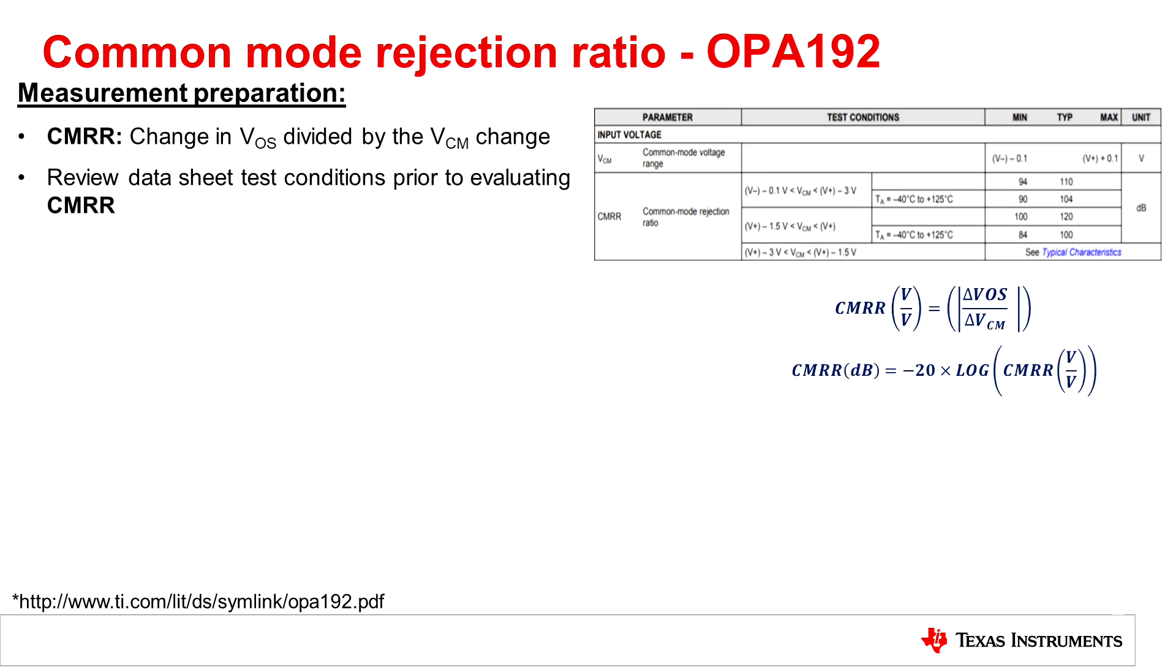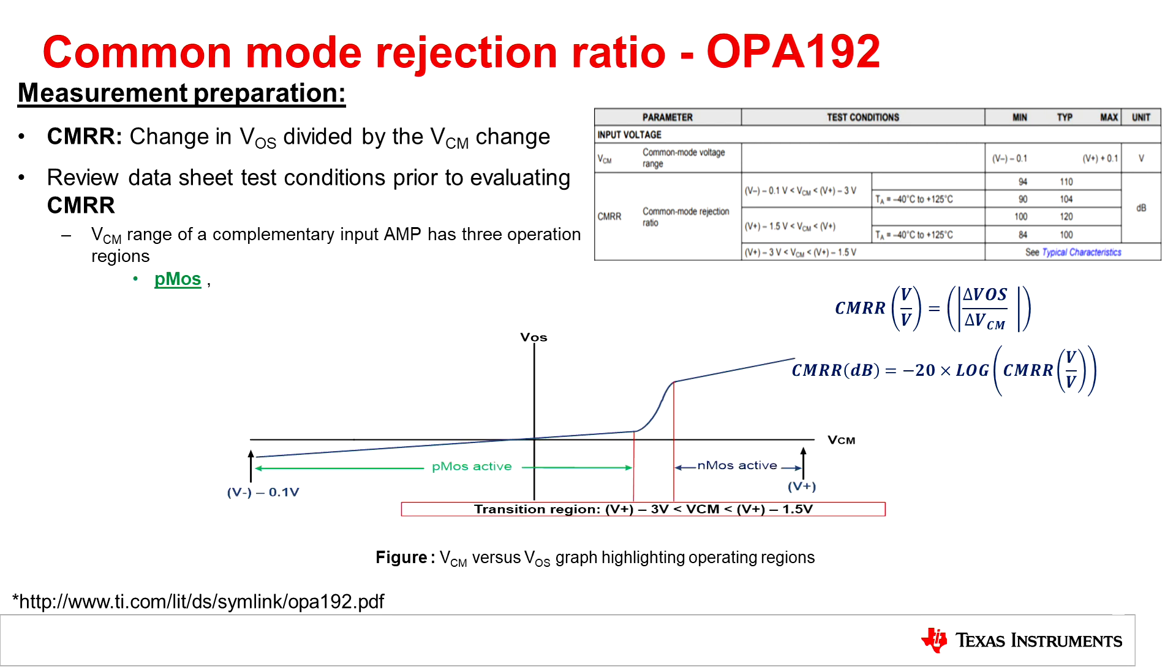In this example, we will use the OPA 192. It's important to note that the OPA 192 is a rail-to-rail complementary input amplifier, which has three operating regions. These operating regions are defined as the PMOS region, the NMOS region, and lastly, the transition region. Please refer to the figure for a visual representation as operating in the transition region may impact CMRR.